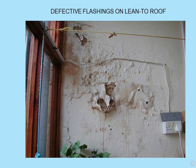Defective flashings on the lean-to roof — a neighbour had put a lean-to roof against this utility room and told the occupant the resulting dampness was condensation.